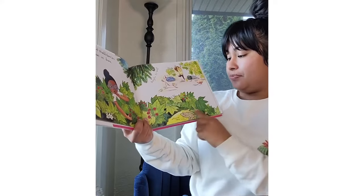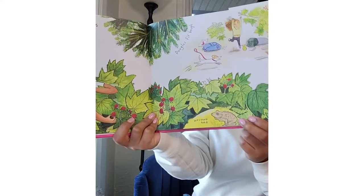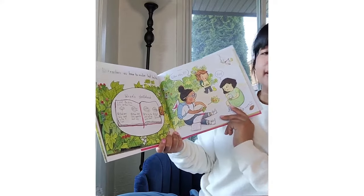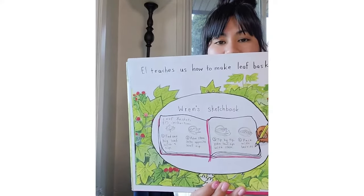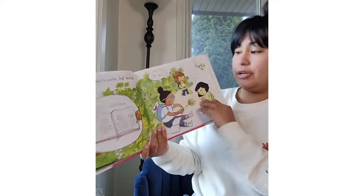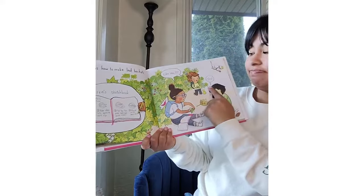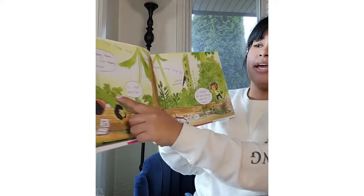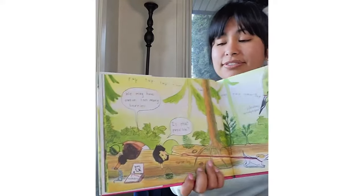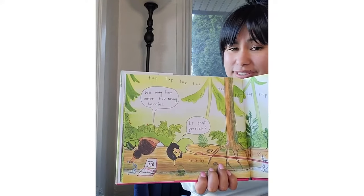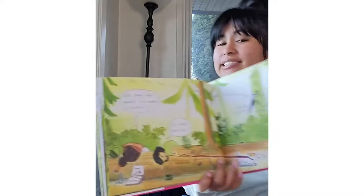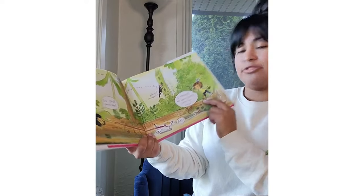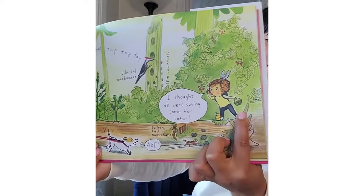Here is a Douglas fir's bough. And a western toad. El teaches us how to make leaf baskets — they're making leaf baskets to hold their berries. Very creative. We may have eaten too many berries. Is it possible to eat too many berries? I think so. Here's a pileated woodpecker. I thought we were saving some for later. Here you can see that there are some berries in their basket.